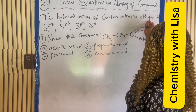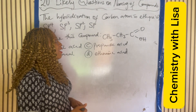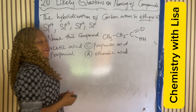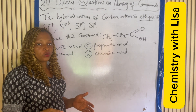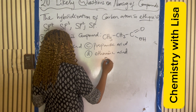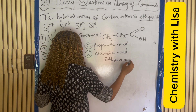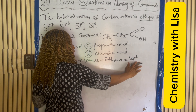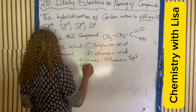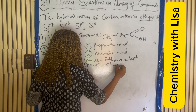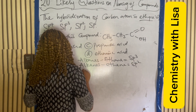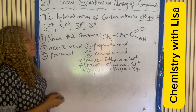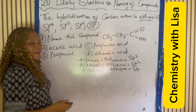Question six: what is the hybridization of carbon atoms in an alkyne? For alkanes, the hybridization is sp³. For alkenes, the hybridization is sp². For alkynes, the hybridization is sp. So the answer to the question is sp.